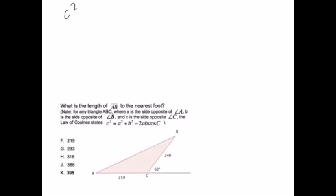So this says that c squared equals a squared plus b squared minus 2ab cosine c.